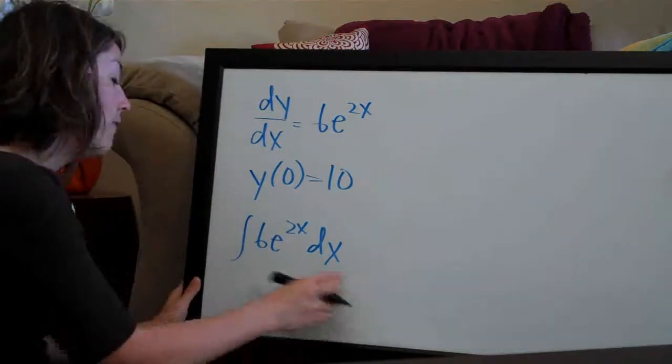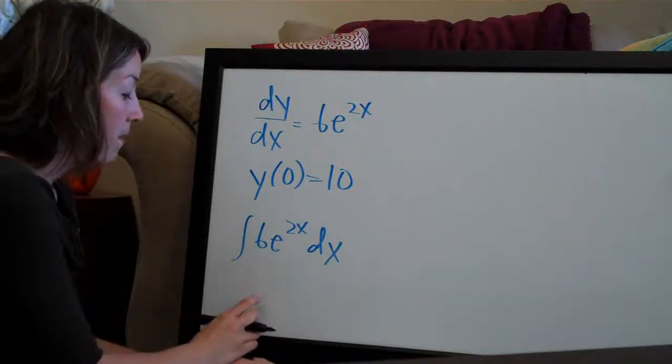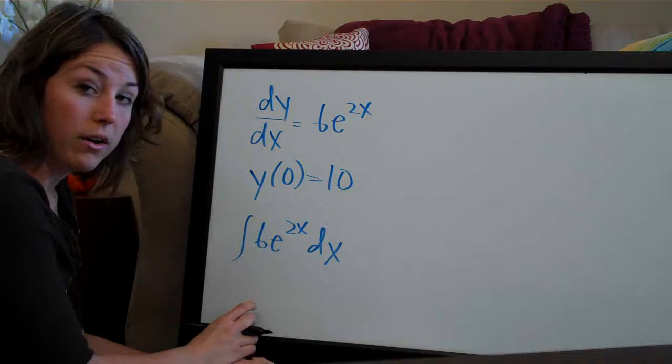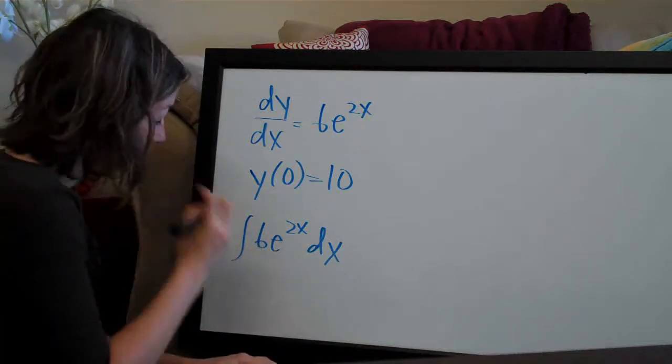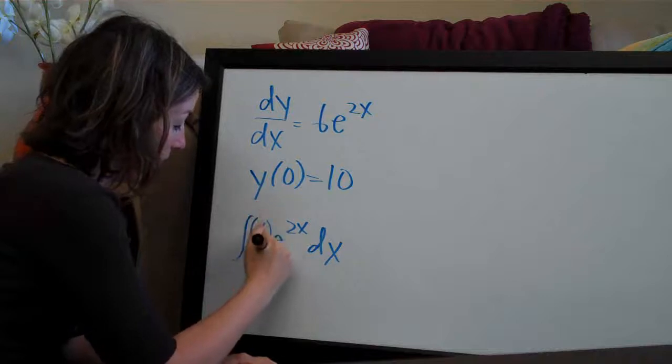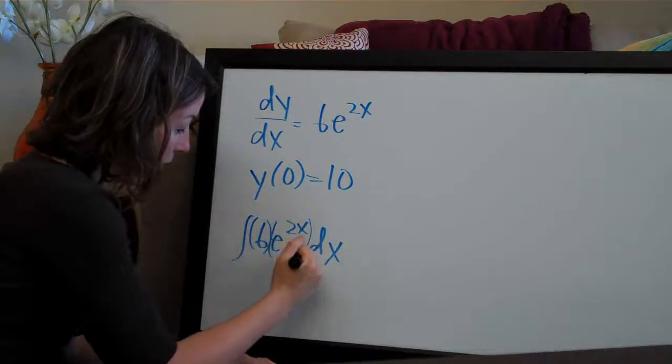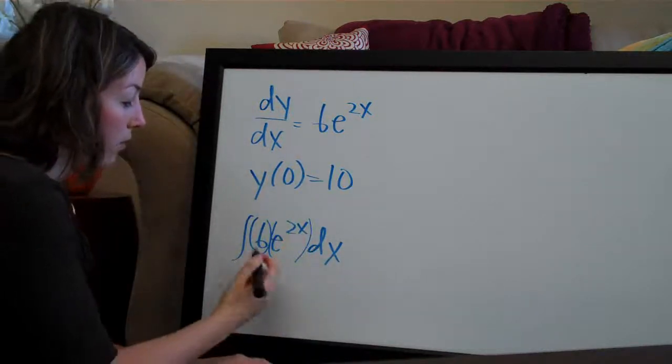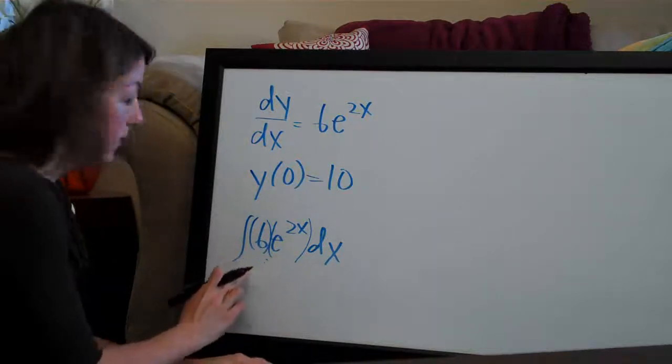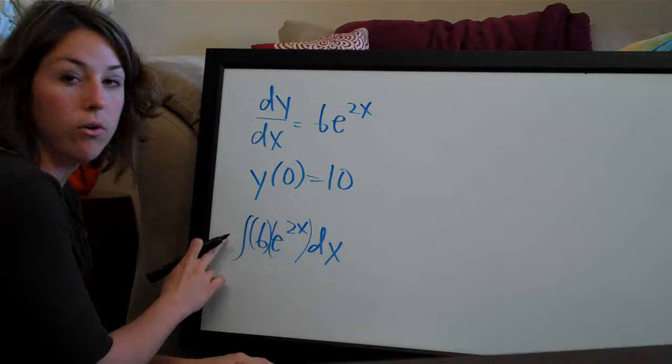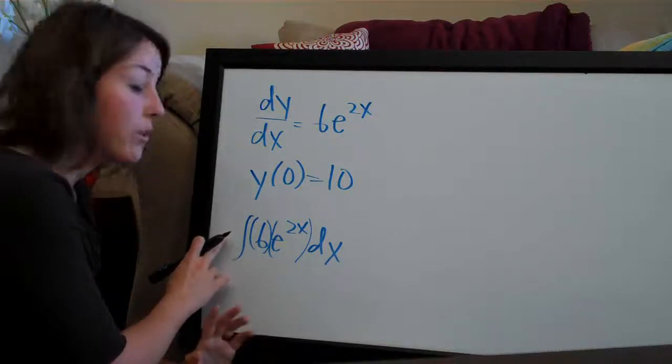So 6e^(2x). The first thing we do, and this applies every time you have a constant in the integral - this 6 and e^(2x) are multiplied together. When they're multiplied together, you can bring the 6 out in front of the integral so you don't have to deal with it when you take the integral.